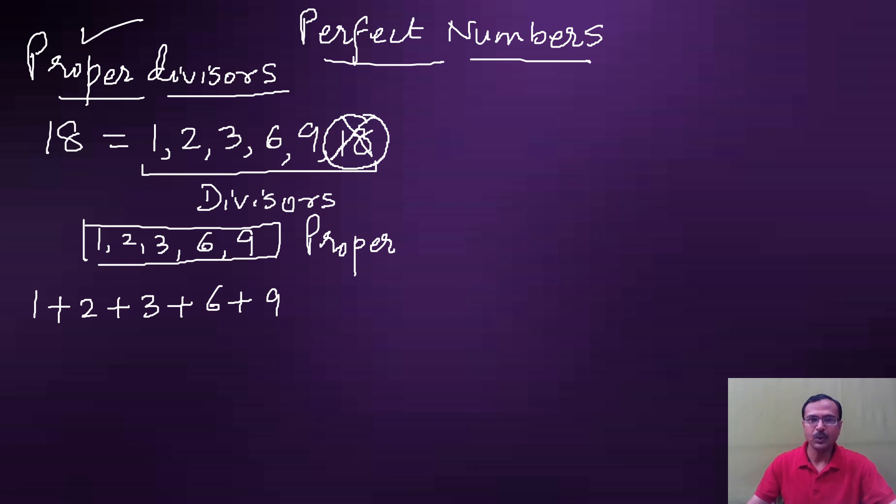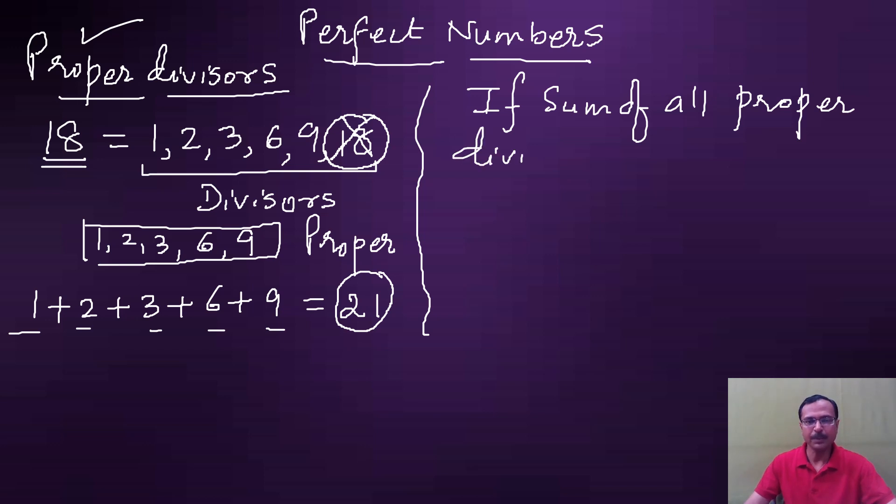Now if I add all these proper divisors, let me see what I get. 9 plus 6 is 15, plus 3 is 18, plus 2 is 20, plus 1 is 21. This number is not equal to the number itself. So now you must be guessing what are perfect numbers. If sum of all proper divisors of a number is equal to the number itself, then we call that number a perfect number.